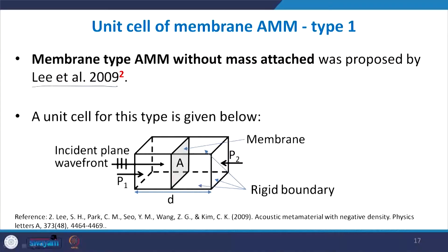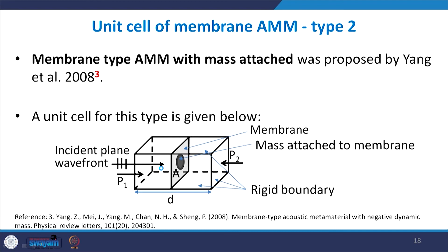After learning about one potential benefit of using a membrane, let us briefly look at the two types of unit cells, both proposed by Li et al. in 2009. The first type is a sub-wavelength waveguide with rigid boundaries and a stretched membrane. The second type is a section of a hollow tube with a stretched membrane and a center mass attached. In the next lecture, I will show how to represent these two unit cells as mass-spring models and derive the effective mass density.